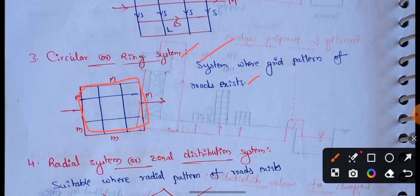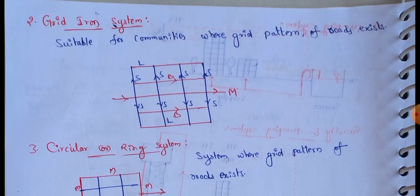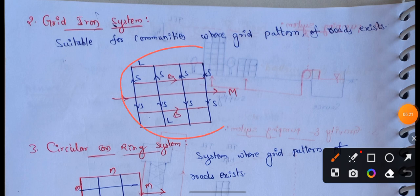The circular system has the same advantages and disadvantages as the grid-iron system.